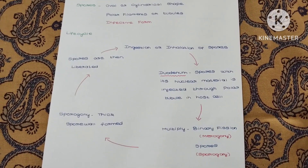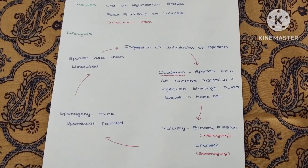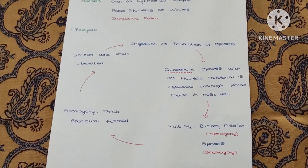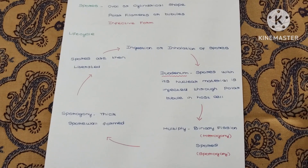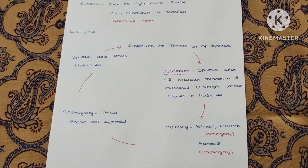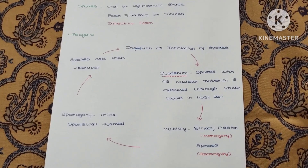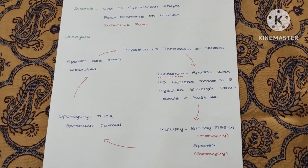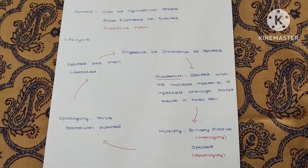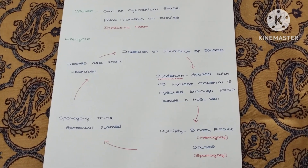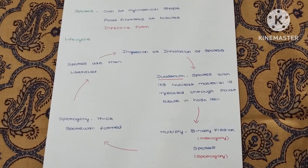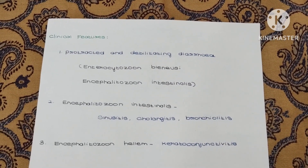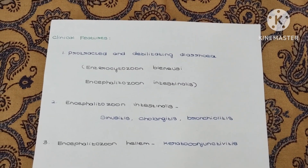Inside the host cell, the organism multiplies by binary fission, which is called virogony, or by sporogony. Due to sporogony, a thick spore wall is formed and a complete spore is produced, which is then liberated and the cycle continues.